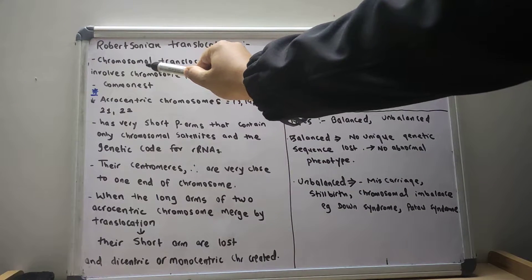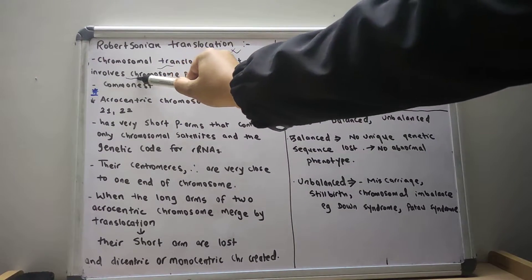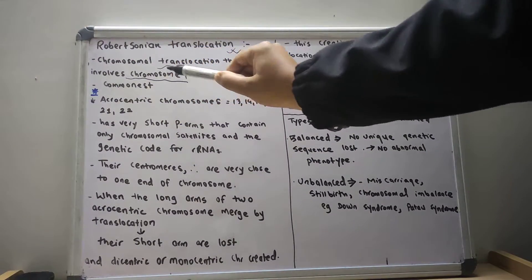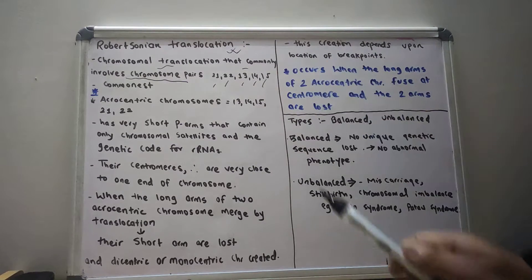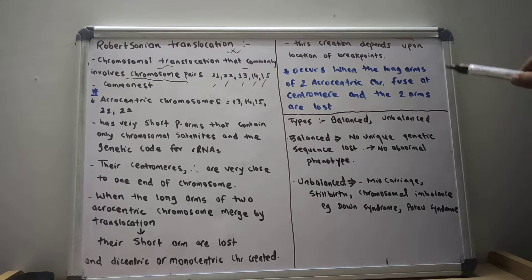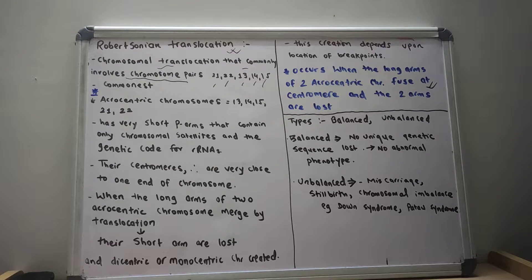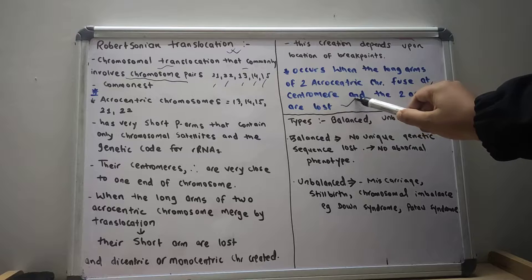The Robertsonian translocation is a chromosomal translocation that commonly involves chromosome pairs 21, 22, 13, 14, and 15. It occurs when the long arms of two acrocentric chromosomes fuse at the centromere and the two short arms are lost.